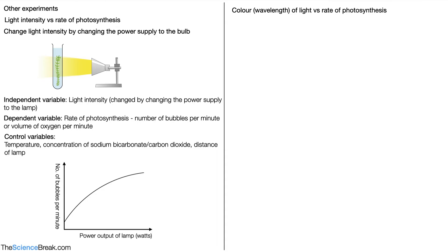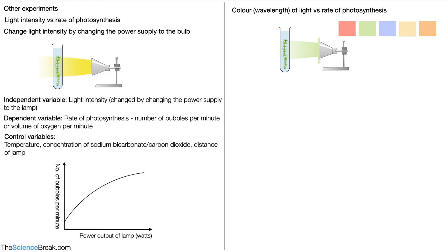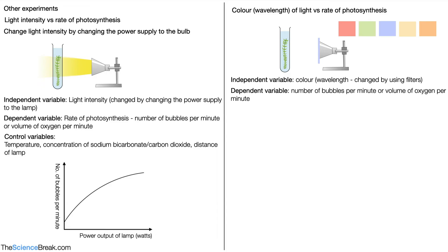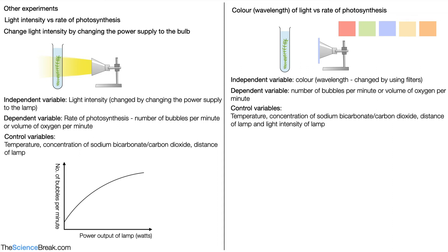Another experiment is to look at the colour or wavelength of light versus rate of photosynthesis. The setup is similar to before, but we use a range of colour filters — plastics that are see-through but have a certain colour. We could shine red light, green light, or blue light onto our pondweed. The independent variable is the colour or wavelength of light, changed using the filters. Dependent variables are bubbles per minute or volume of oxygen per minute. Control variables are temperature, concentration of sodium bicarbonate, the distance of the lamp, and the light intensity.